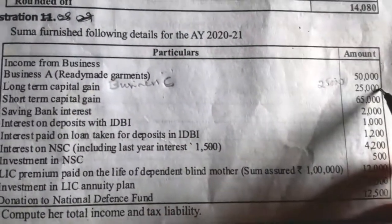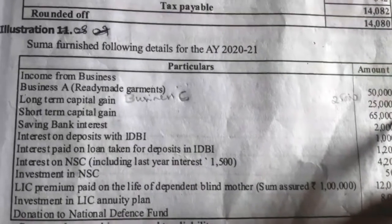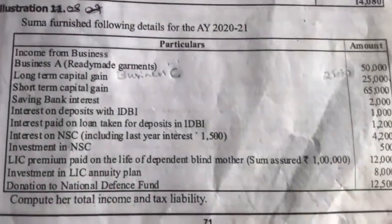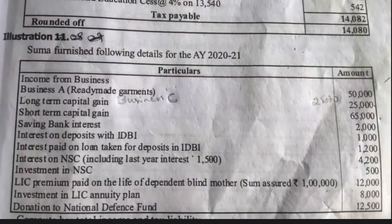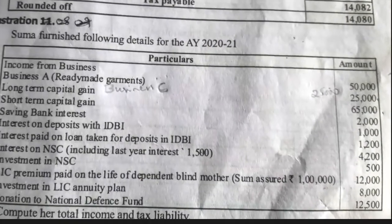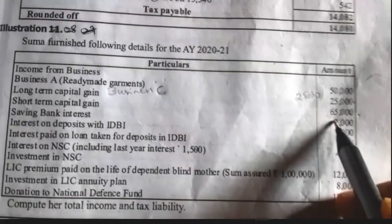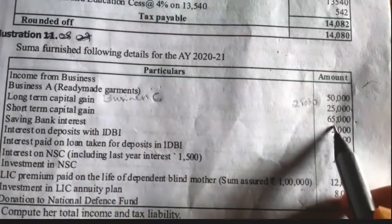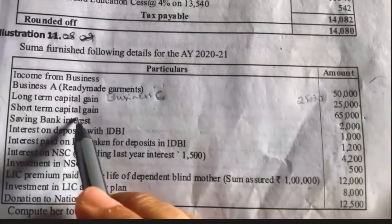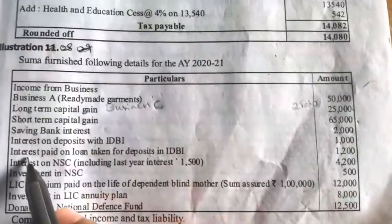Next, long-term capital gain 25,000 and short-term capital gain 65,000, so total capital gain is 95,000. Then saving bank interest — that is income from other sources — rupees 2,000. For this saving bank interest she can claim a deduction under Section 80TTA. So the 2,000 amount can be claimed under Section 80TTA; the maximum she can claim is 10,000 for interest on saving bank as well as post office saving bank deposit.